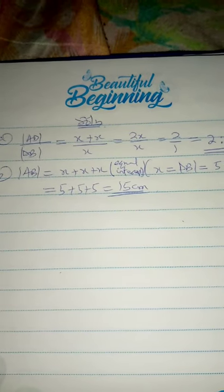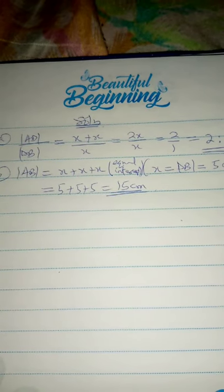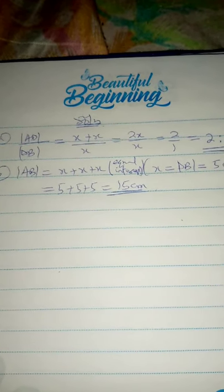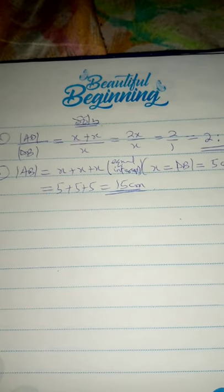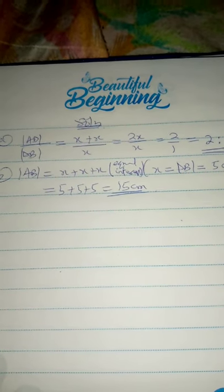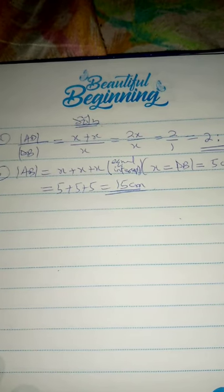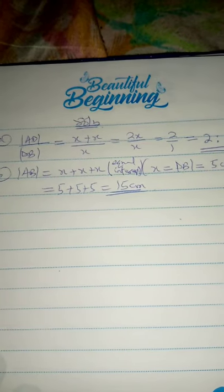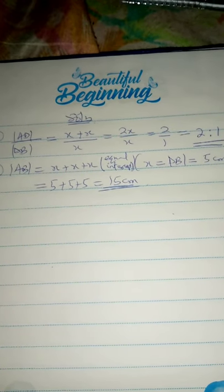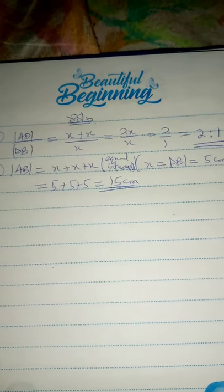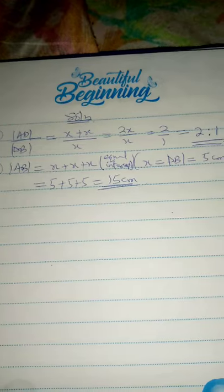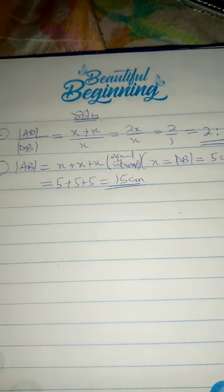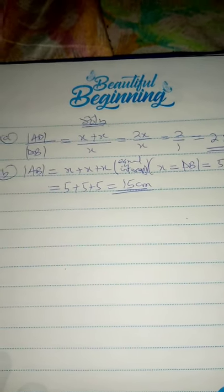That's all you need to know about equal intercepts. I want to state the theorem that has assisted us: if 3 or more parallel lines cut off equal intercepts on a particular transversal, then those 3 or more parallel lines will cut off equal intercepts on any other transversal that runs over them. That's all.